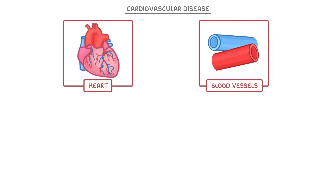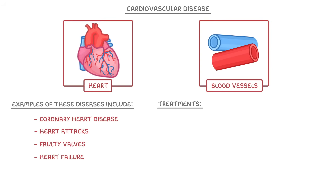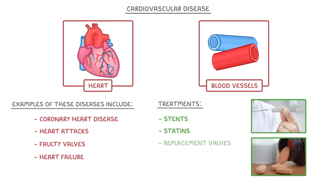Cardiovascular disease is a general term that refers to diseases of the cardiovascular system, which is basically the heart and the blood vessels. Examples of these diseases include coronary heart disease, heart attacks, faulty heart valves and heart failure. The aim of this video is to take a quick look at these diseases, but then mainly focus on the treatments that we can use to fix them, which include stents, statins, replacement valves and even replacement hearts.